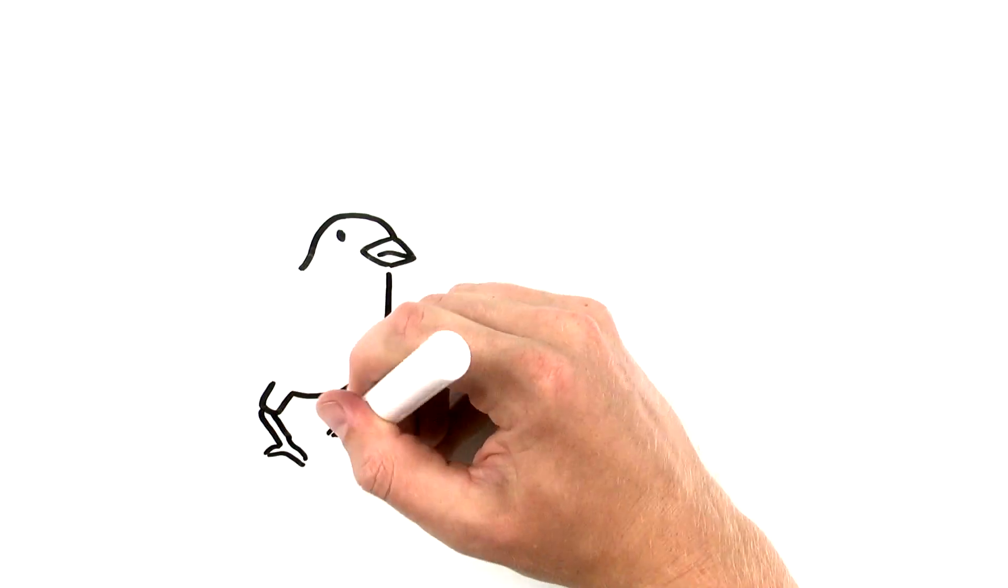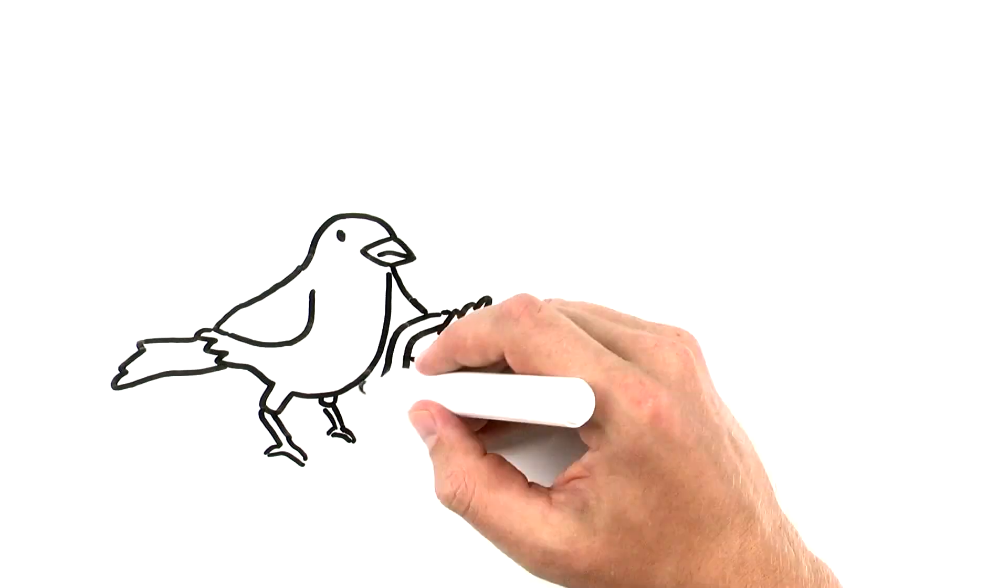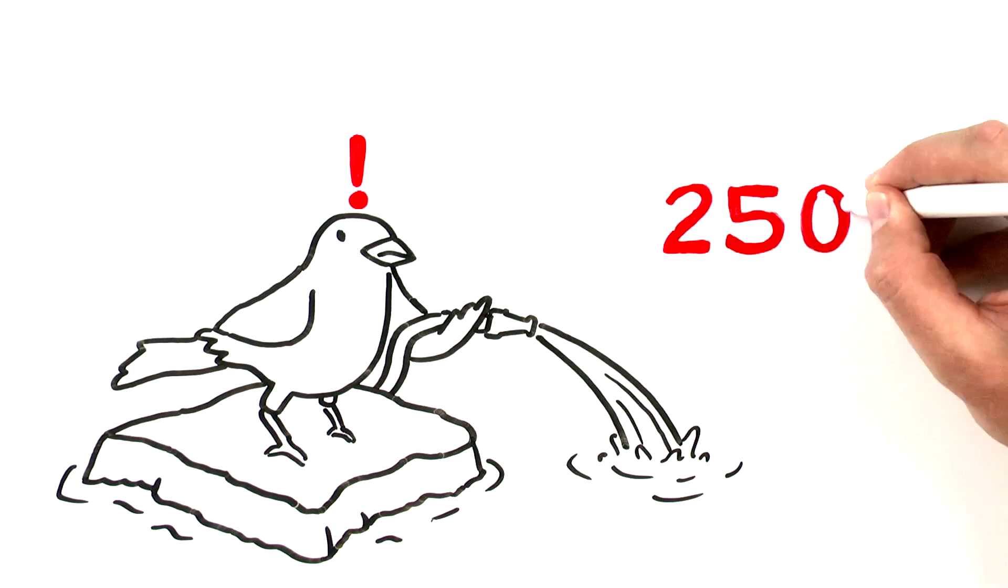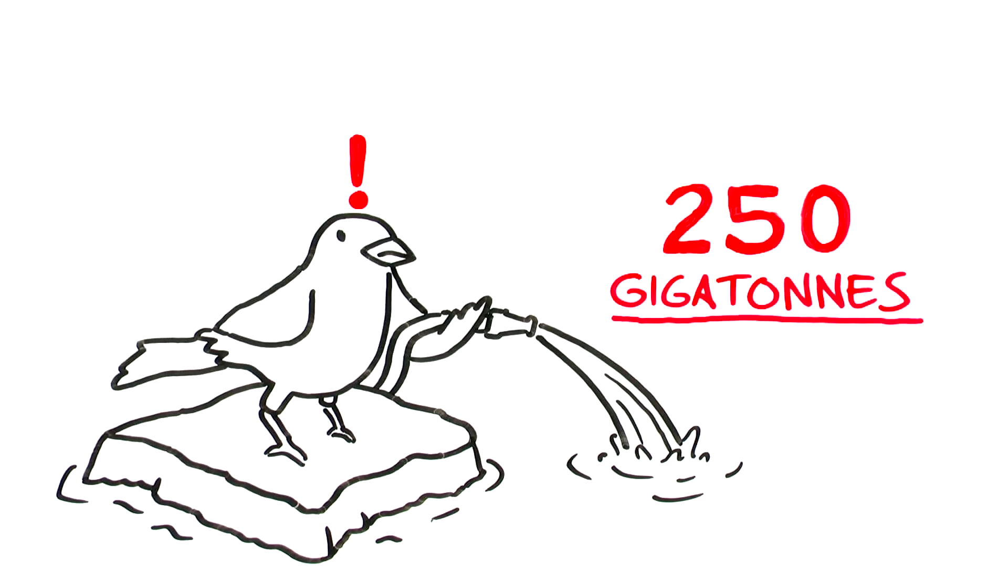And in fact, the ice is melting. It's far from all gone. That could take centuries. But Greenland's ice sheet currently adds about 250 gigatons of water to the ocean every year.